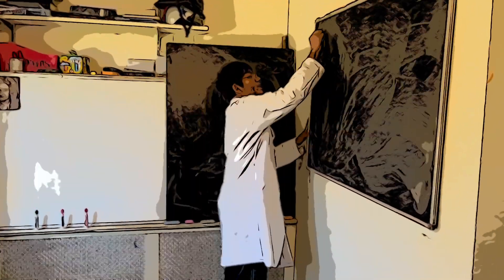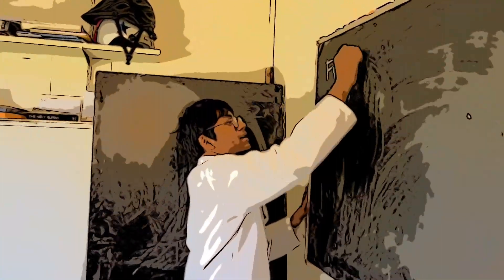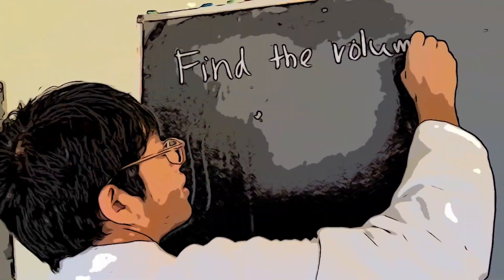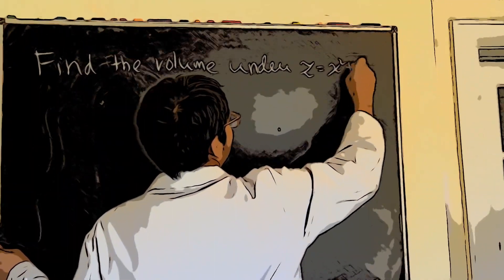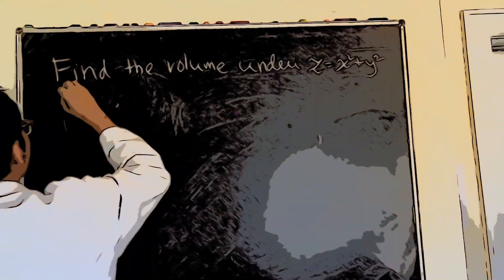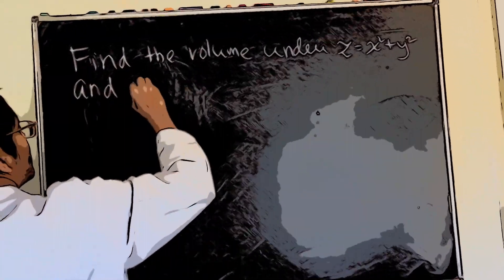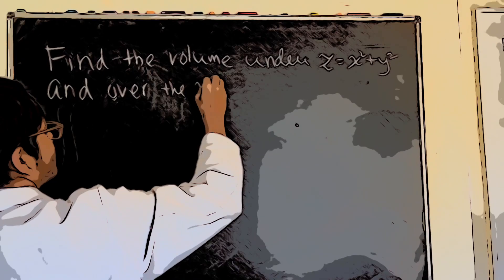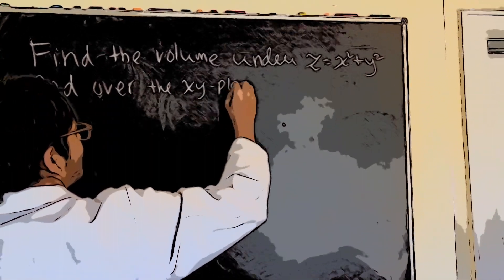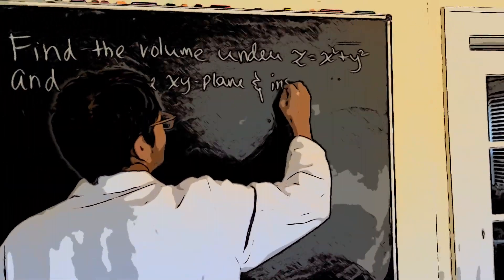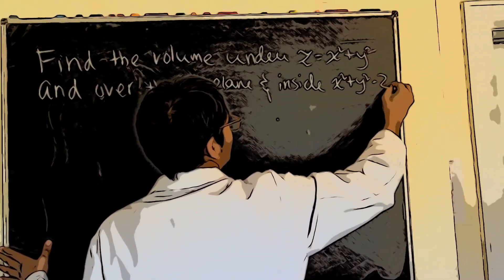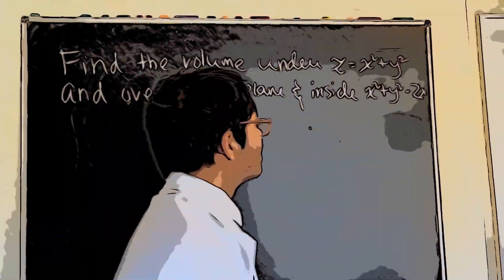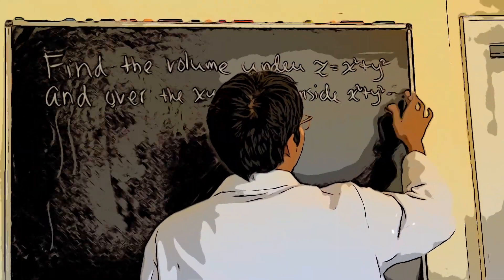So what is our problem? It is as follows. Find the volume under the paraboloid z equals x squared plus y squared and over the xy plane, and inside the cylinder x squared plus y squared equals 2x.